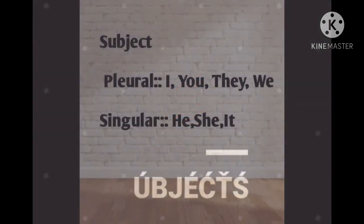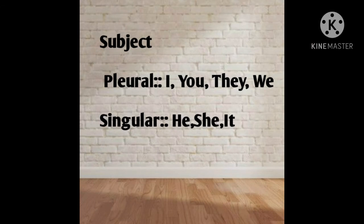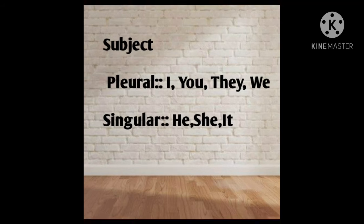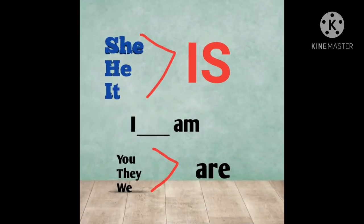Now let's see the subjects, which are really important to understand. When we construct tenses, you should know which is plural and which is singular. Plural subjects: I, you, they, we. Singular subjects: he, she, it. For singular subjects, the auxiliary verb is 'is.' For I, we use 'am.' For you, they, we, we use 'are.' This is the subject-auxiliary verb structure for present continuous.